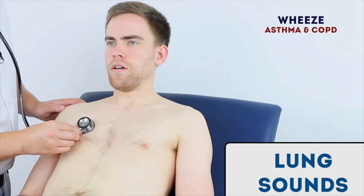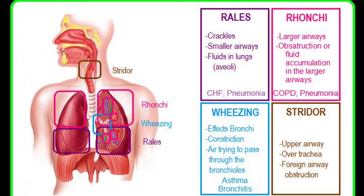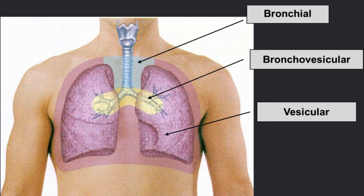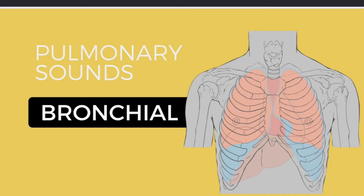First of all, we are going to listen to the normal lung sound, and it is divided into three parts. First is bronchial, second is broncho-vesicular, and the third one is vesicular. First of all, we will listen to bronchial.